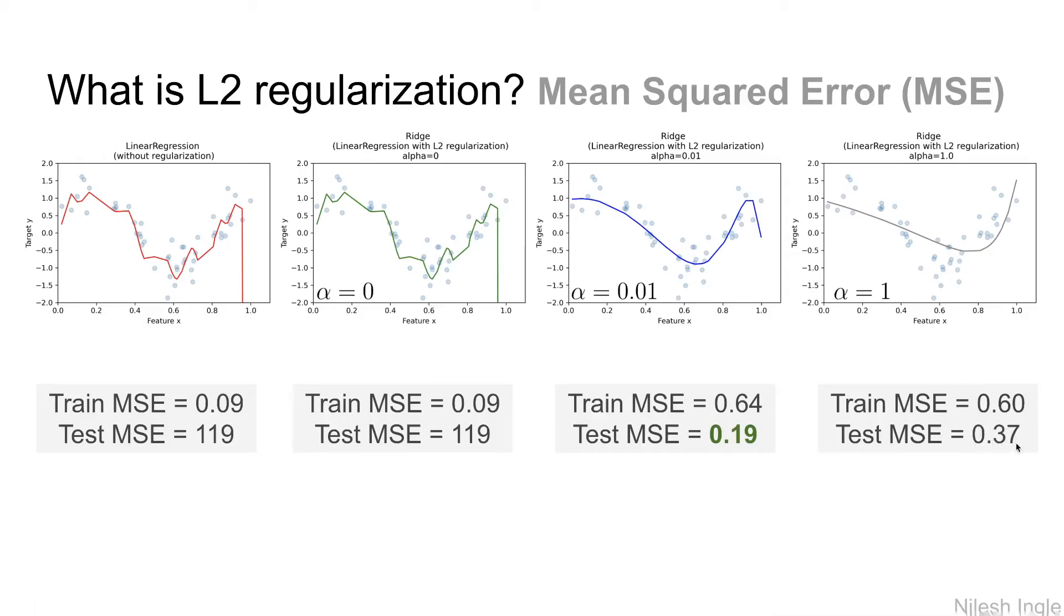Now if we continue to increase the value of alpha to one we see that the test MSE does start to go up and what that tells us is that we are starting to introduce bias in the model and thus the model is becoming more rigid and it's not fitting the data well. So the MSE is one of the indicators that can be used to find this, and thus for regularization what needs to be done is we need to tune the value of alpha such that we find the best MSE possible.